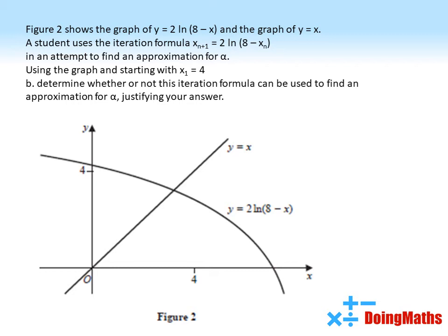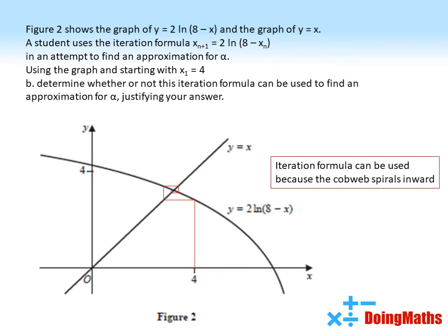To answer this one, we're going to draw on the graph. We're starting with x_1 = 4. From the point 4 on the x-axis, we draw a vertical line straight up to our curve. From there, we do a horizontal line to y = x, then a vertical line back to the curve, a horizontal line back to y = x, and so on. Vertical, horizontal, vertical. We then look at this line that we've created here. Our iteration formula therefore can be used because the cobweb spirals inwards.